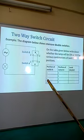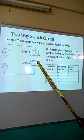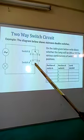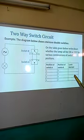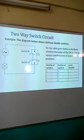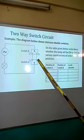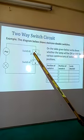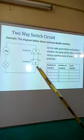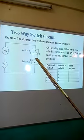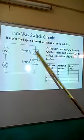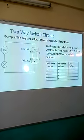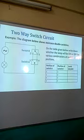When switch A is at point 4 and switch B is at point 3, the circuit will again be complete and the bulb will light. When switch A is at 4 and switch B is at 2, the circuit is incomplete because there will be no connection at that point, so the bulb will not light. This is a simple demonstration of how the two-way switch works.